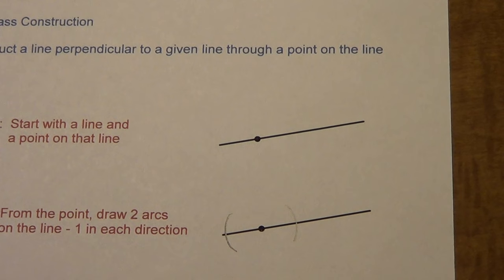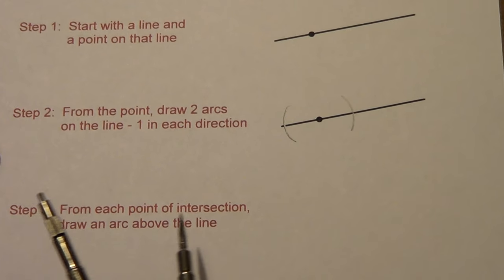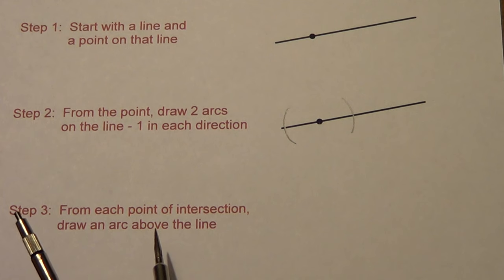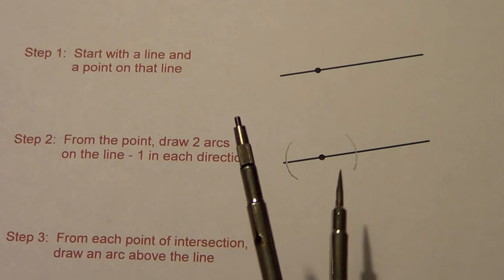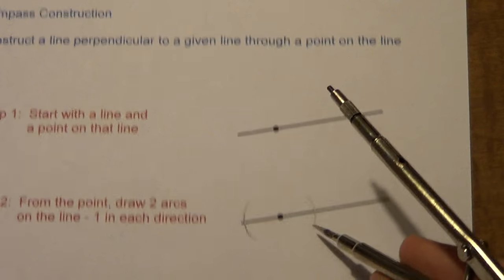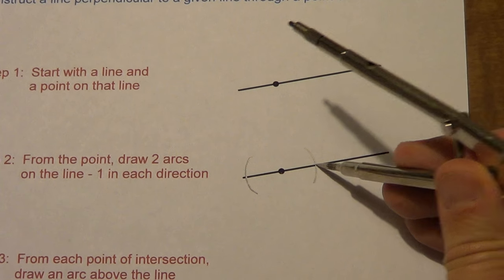Now, from each point of intersection—step three—from each point of intersection, we're going to draw an arc above the line, and then we're just going to connect. You could do both above and below if you really want to. It doesn't matter. Or you could do just below. I'm going to put my pivot point right on the point of intersection. I'm going to draw an arc somewhere up here or somewhere down here or both.